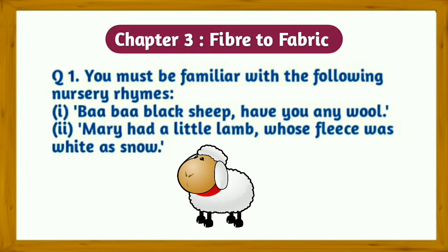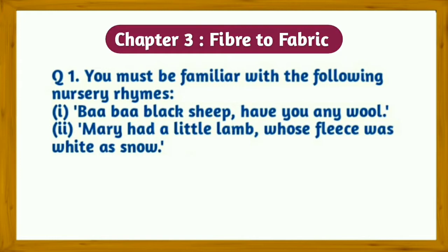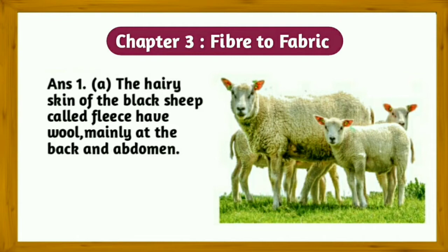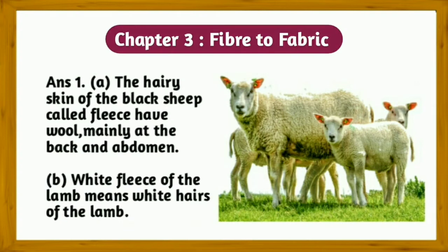Question number one: You must be familiar with the following nursery rhymes — 'Baba Black Sheep, have you any wool?' and 'Mary had a little lamb whose fleece was white as snow.' Answer the following: (a) Which part of the black sheep has wool? (b) What is meant by the white fleece of the lamb? Answer: (a) The hairy skin of the black sheep, called fleece, has wool mainly at the back and abdomen. (b) White fleece of the lamb means white hairs of the lamb.